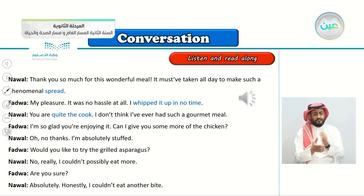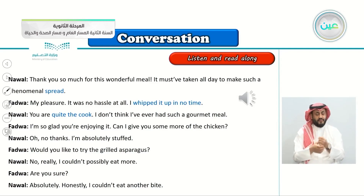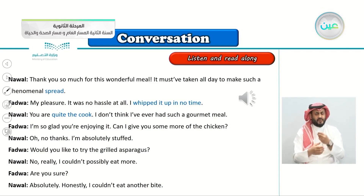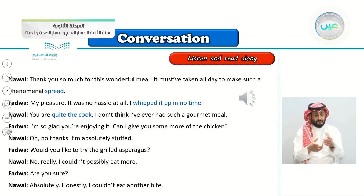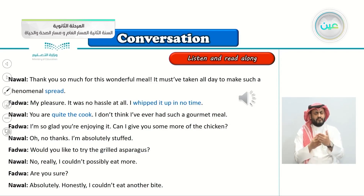Nawal: You are quite the cook. I don't think I've ever had such a gourmet meal. Fadwa: I'm so glad you're enjoying it. Can I give you some more of the chicken? Nawal: Oh, no thanks. I'm absolutely stuffed. Fadwa: Would you like to try the grilled asparagus? Nawal: No, really. I couldn't possibly eat more. Fadwa: Are you sure? Nawal: Absolutely, honestly. I couldn't eat another bite.